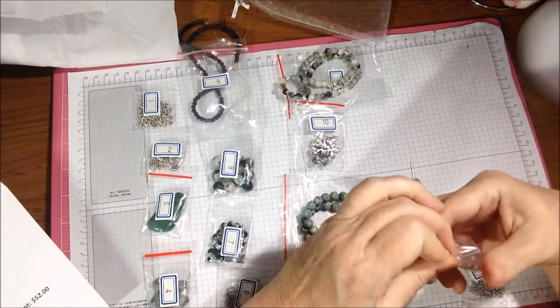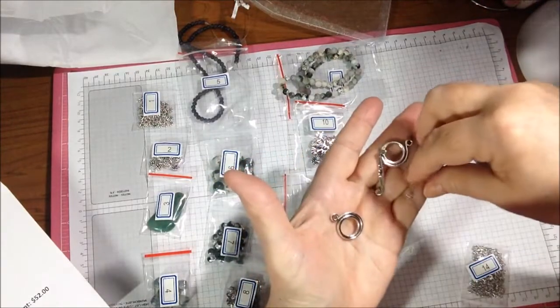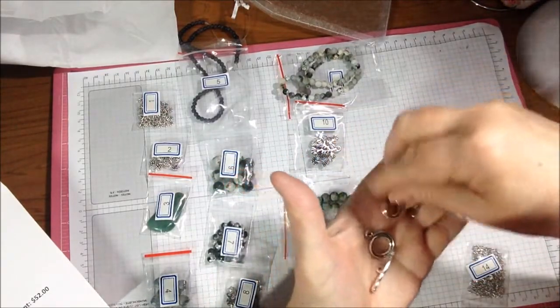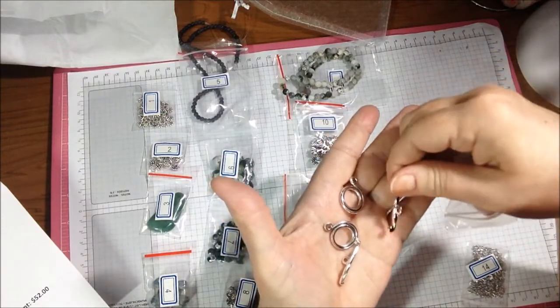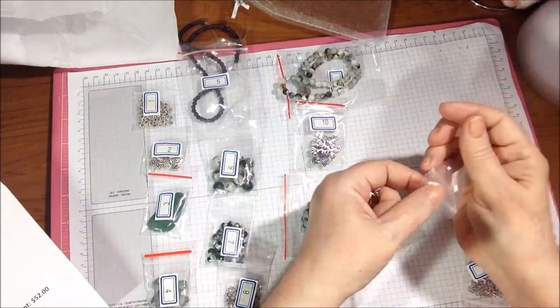And number 13 is two sets fancy swirled toggle clasps, which are here. Those are nice, they're a little bit bigger bar which I like. Yeah, those can be used in a variety of designs.